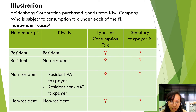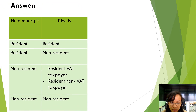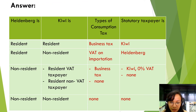The illustration is presented: Heidenberg Corporation purchased goods from Kiwi Company — who is subject to consumption tax under each of the following independent cases? In item number 1, the transaction is from resident seller to resident buyer; therefore, it is subject to business tax, and the statutory taxpayer is the seller — so it is Kiwi. In item number 2, the transaction is from non-resident seller to resident buyer; therefore, it is subject to VAT on importation, and the statutory taxpayer is the buyer — so it is Heidenberg.